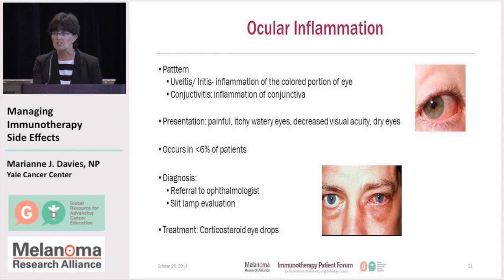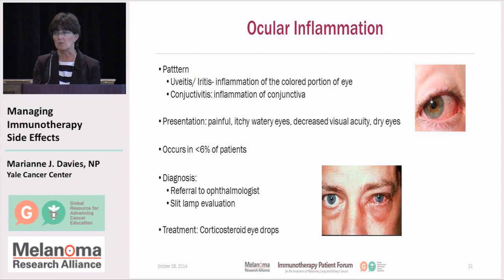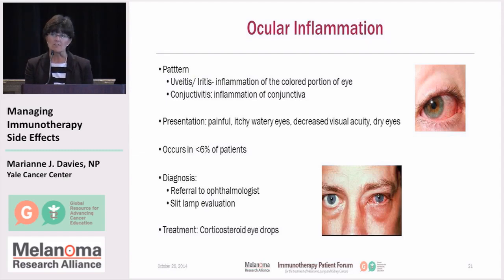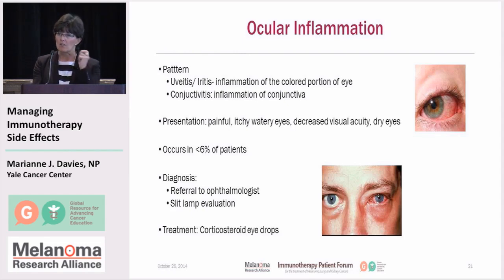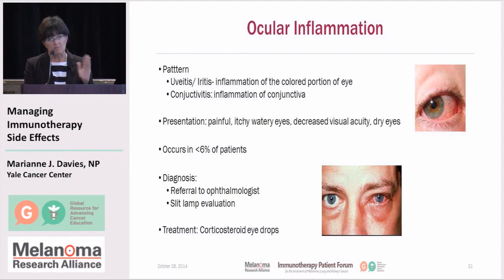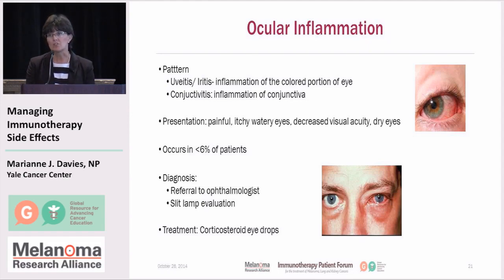Ocular inflammation can also occur. Patients may come in — it tends to be one side versus the other, but it can occur with both eyes — in the way of uveitis, iritis, or conjunctivitis. It occurs in less than 6% of patients. Patients may say they've got some irritation in their eye. If it's really significant, we hold the therapy that day and refer to an ophthalmologist. Normally steroid eye drops can provide symptomatic control.